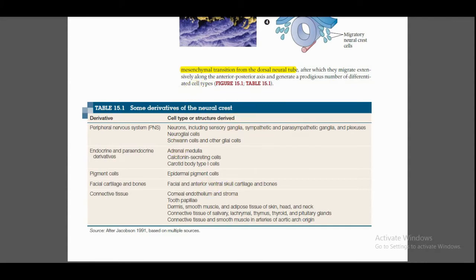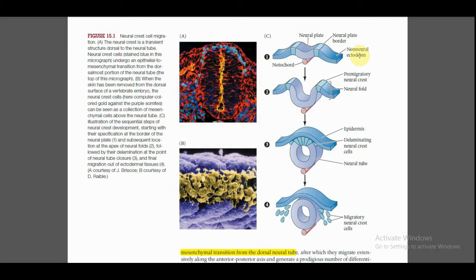Neural crest cells migrate along the anterior-posterior axis and generate a number of differentiated cell types. This figure shows neural crest cell migration. In this figure, the blue colored part at the extreme end is the non-neural ectoderm — the ectodermal or epidermis portion. The colored region is the neural plate border, where neural crest cells are found. The groove region is the neural plate, and the notochord is also indicated.